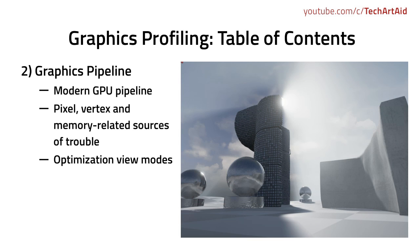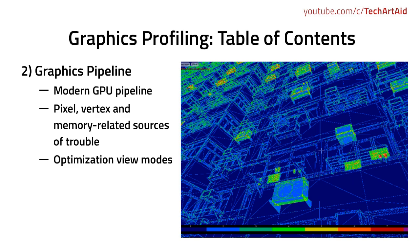The second part covers the graphics pipeline — how a modern GPU works, what pixel, vertex, and memory related issues you can expect, and how to find them. I will also show you optimization view modes. For example, here you can see a quad overdraw mode, which shows an issue that is not quite known among artists, but it's very important when preparing your static meshes.